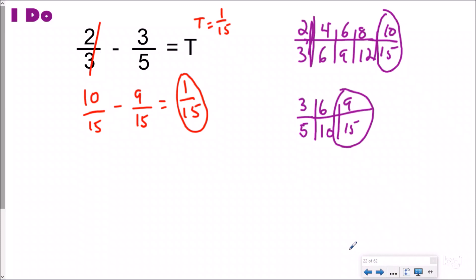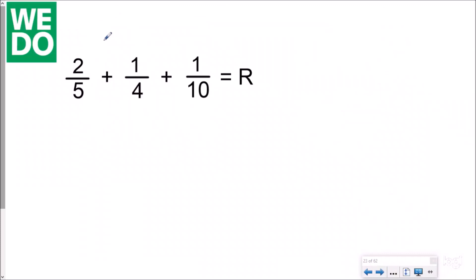Let's dive right in to doing one together, working with Dr. Bones as we solidify your mathematical reasoning and understanding. So here I have two fifths plus one fourth plus one tenth equals r. And so here I have, I know that my denominators need to be the same for all of them.